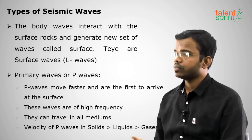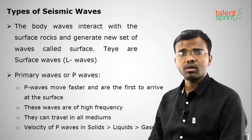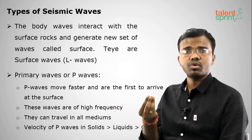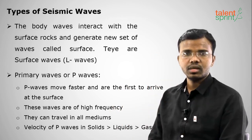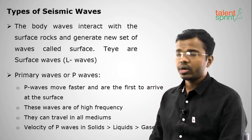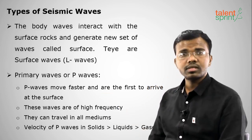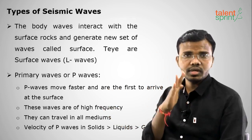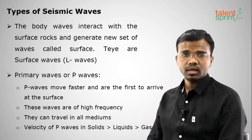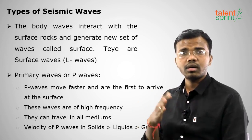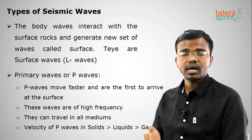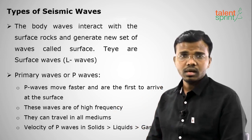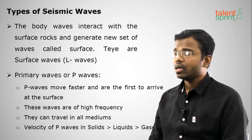Primary waves or P waves move faster than all other waves. They are first to originate from the focus, travel in all directions, and reach the surface first. They have higher frequency and can travel in all mediums — solid, liquid, or gas. The velocity of P waves is higher in solids than in liquids, and higher in liquids than in gases.